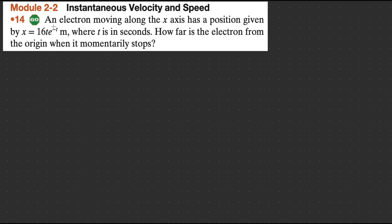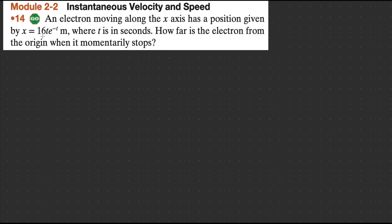Module 2.2, problem number 14: an electron moving along the x-axis has position given by x = 16t·e^(-t) meters, where t is in seconds. We have to find the distance the electron has covered from the origin along the x-axis when it momentarily stops.